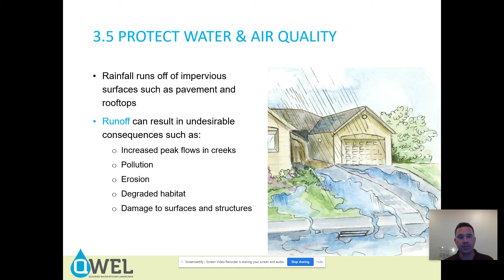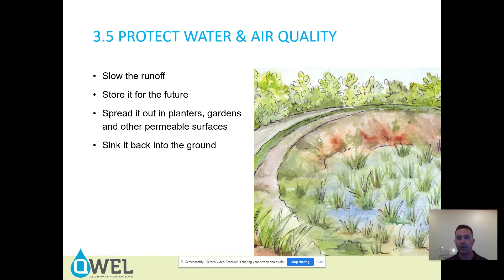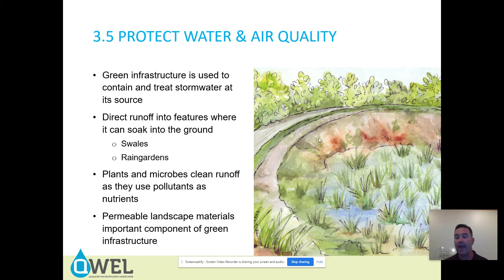Rainfall runs off impervious surfaces such as pavement and rooftops. Runoff can result in undesirable consequences such as increased peak flows in creeks, pollution, erosion, degraded habitat, and damage to surfaces and structures. The important things to do in order to protect water and air quality: slow runoff down, ideally store it for the future, spread it out in planters, gardens, or other permeable surfaces, and sink it back into the ground. Slow it, spread it, sink it — that's how we keep a healthy soil and a healthy watershed.